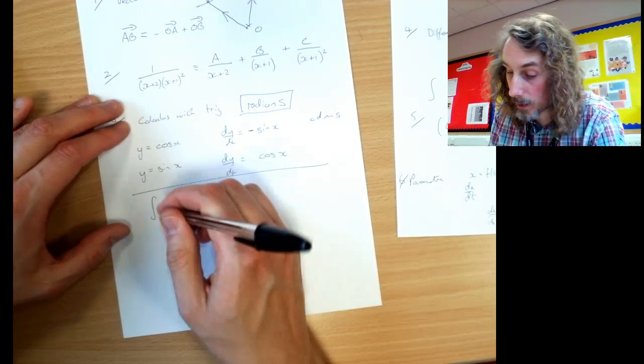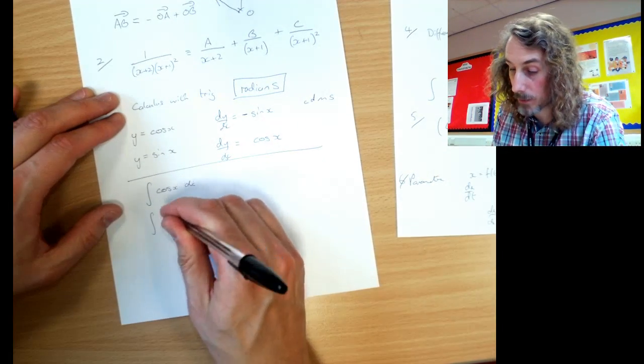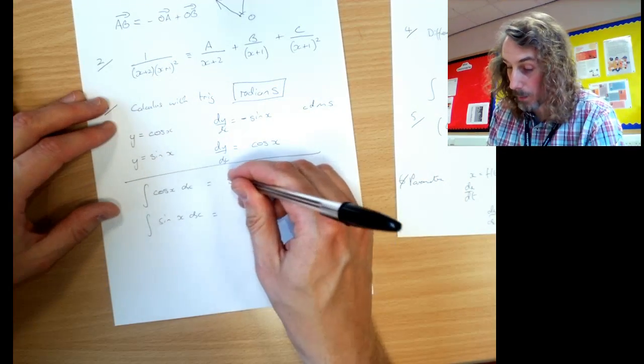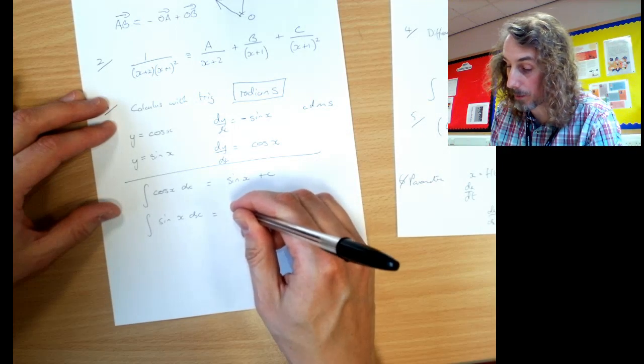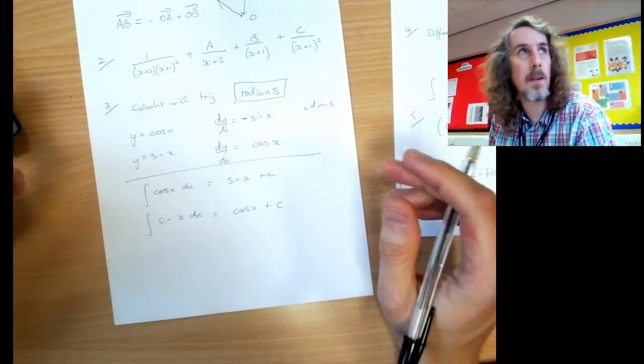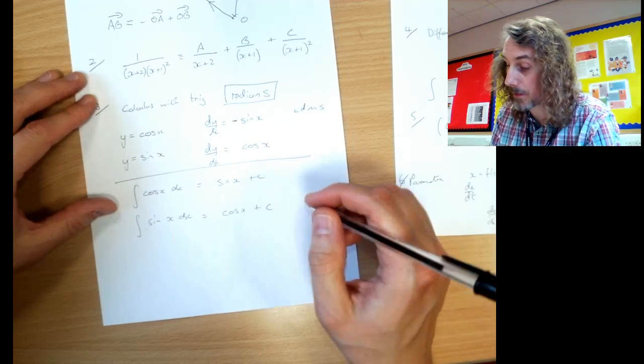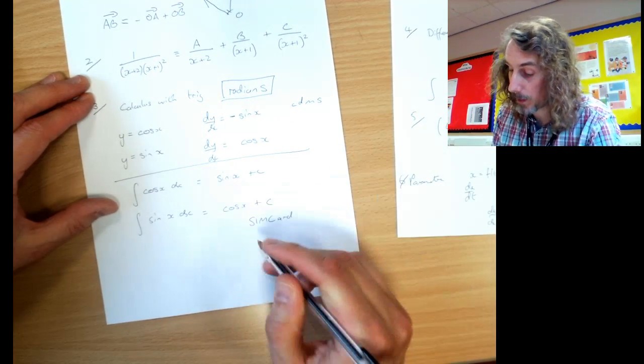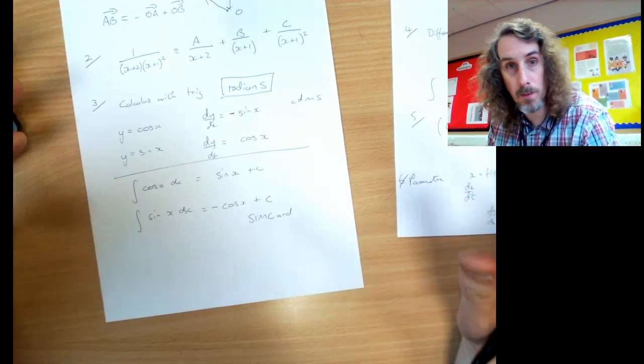In the same way, when you're doing integration of cos X and the integral of sin X, they're going to go to the other one. Cos goes to sin. Sine goes to cos. Which one goes negative? You could remember it's the opposite of differentiation. Or, Dave remembers SIM card. Sine integrates to minus cos. That's how I remember it.